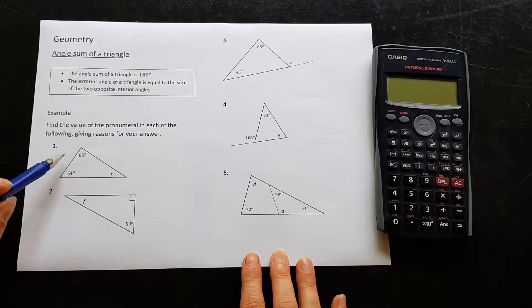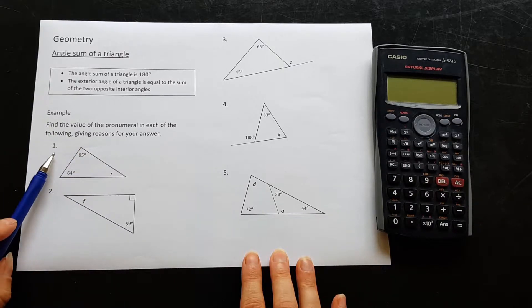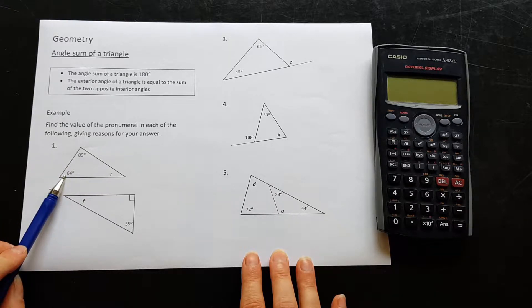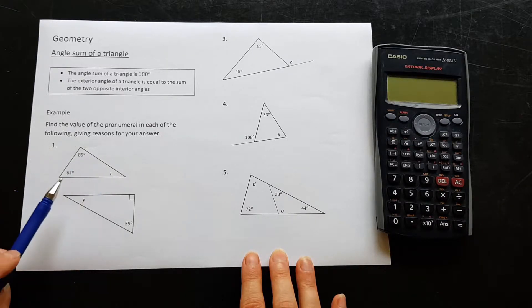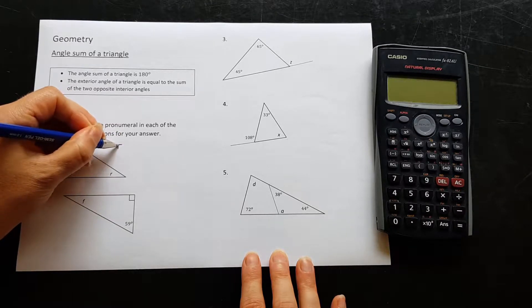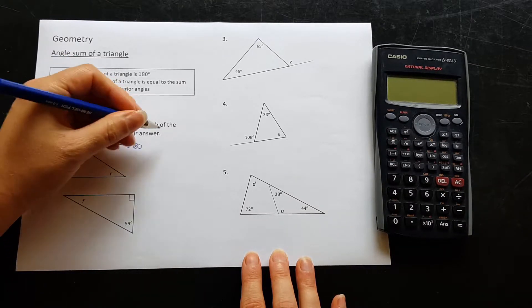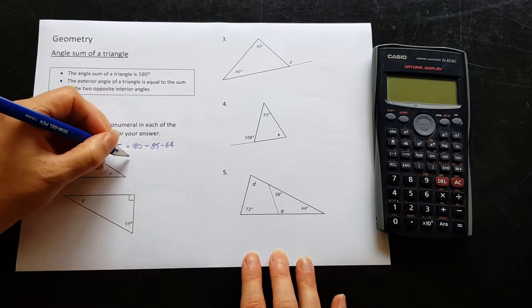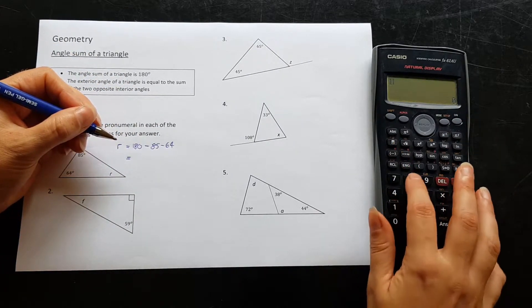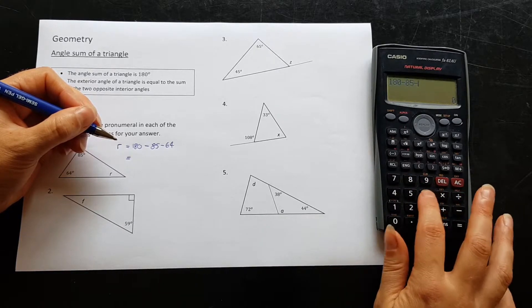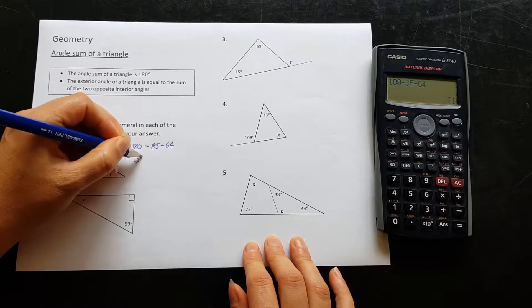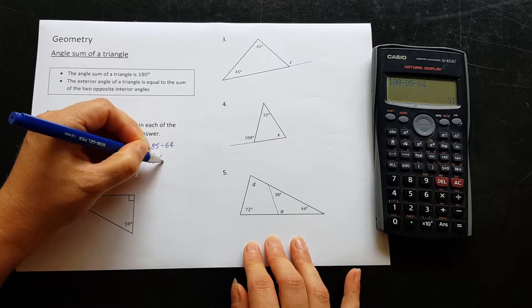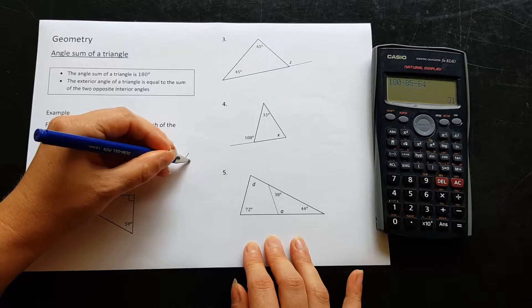Find the value of the pronumeral in each of the following, giving reasons for your answer. Okay, so number one, we want to find the value of r. We have two other angles in our triangle, 85 and 64. If I want to find r, I know that all of these angles have to add up to give 180. So r must be equal to 180 minus the two angles that we know, minus 85 minus 64. Okay, using the calculator, 180 minus 85 minus 64 is equal to 31 degrees. Okay, now giving reasons in brackets, we can write angle sum of a triangle.